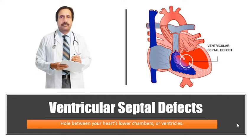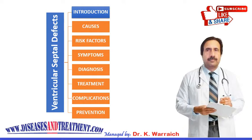Ventricular septal defect, commonly known as VSD, is a hole between the heart's lower chambers — the ventricles. As you can see in this picture, these are the two lower parts, right and left ventricles, with a hole between them. The defect can occur anywhere in the septum, the muscle that divides the two sides of the heart. There are varying types of ventricular septal defects.